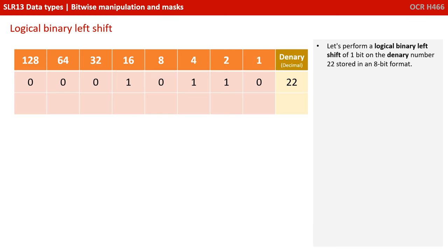With a binary shift, all we're going to do is shift all the bits over to the left or to the right. Let's consider the binary number 22. We're going to left shift it by one bit.